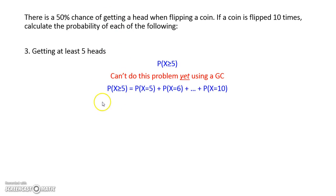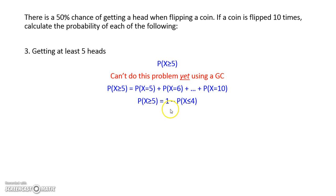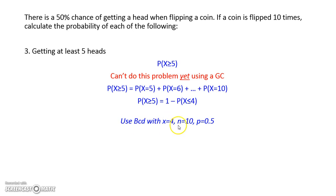The probability of x being greater than or equal to 5 means we're interested in the probability of x equal to 5, plus x equal to 6, all the way up to x equal to 10. We can rewrite this as 1 minus the probability of x being less than or equal to 4, because if we're interested in everything 5 and higher, what we're not interested in is everything 4 or lower. Now we can use BCD, entering x equal to 4, n equal to 10, and probability 0.5.